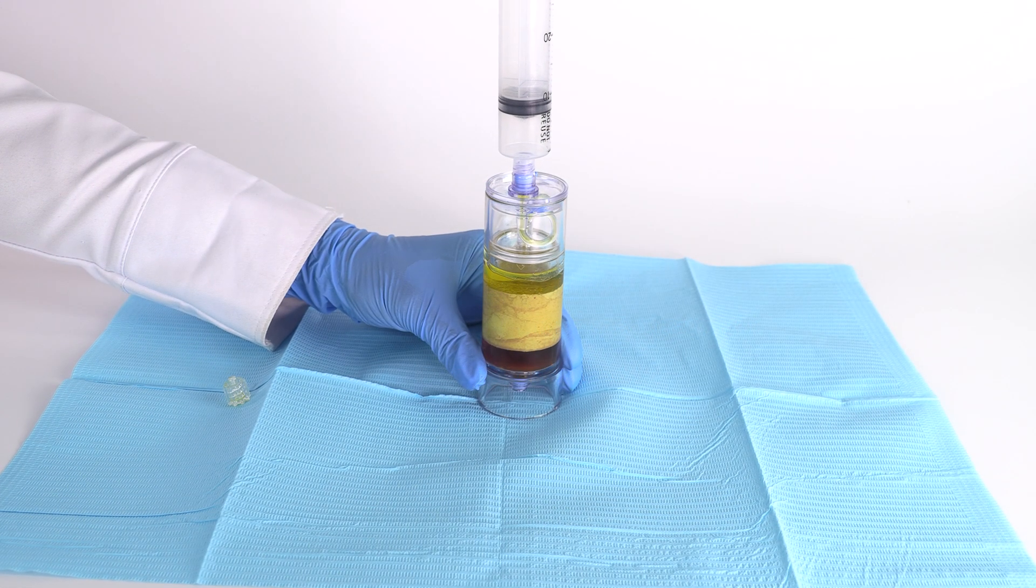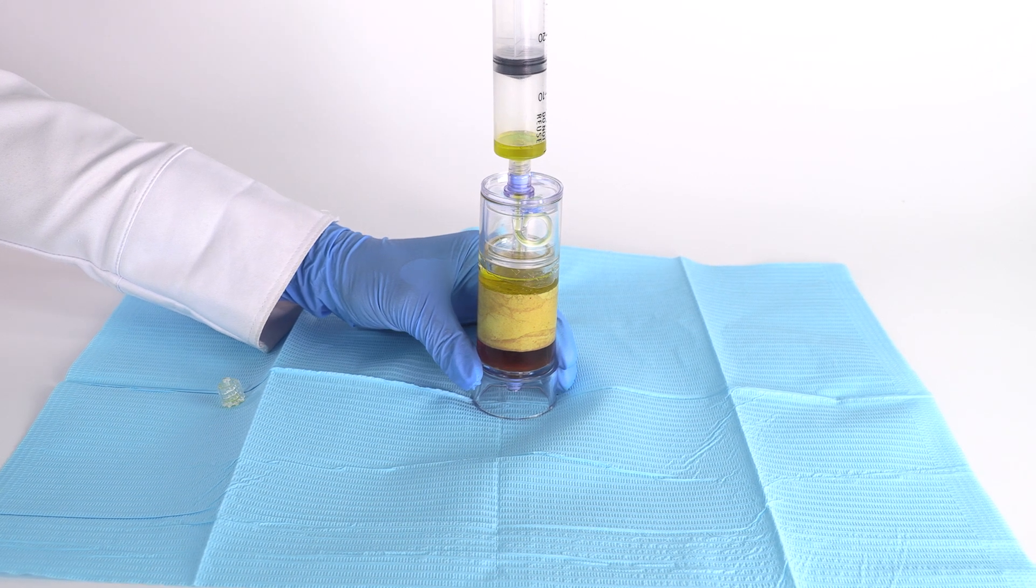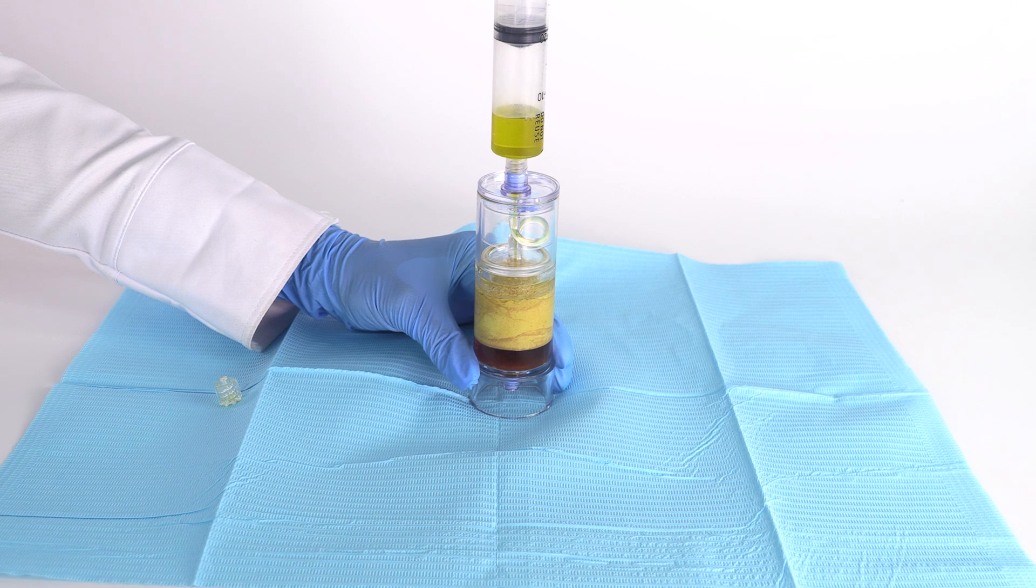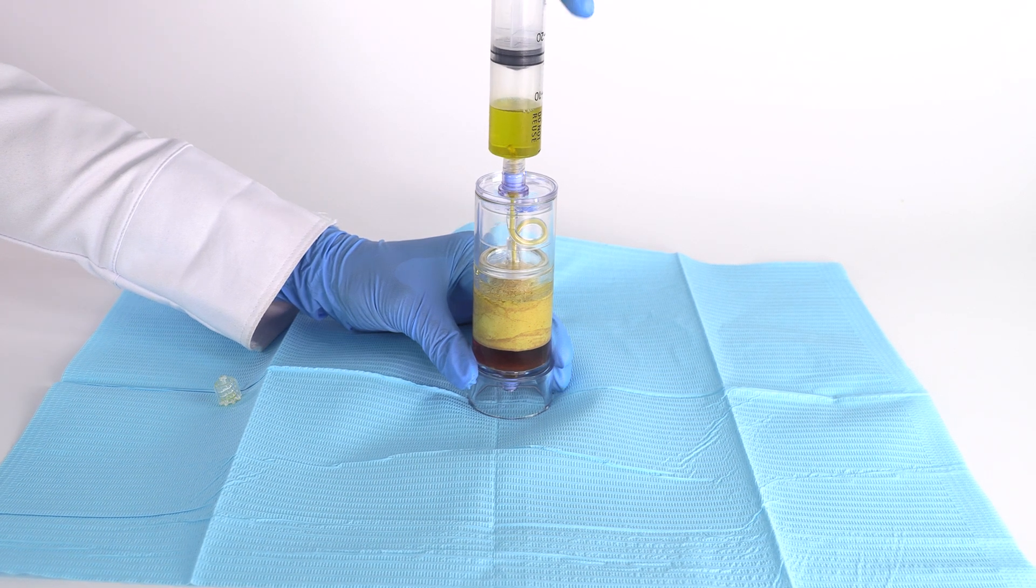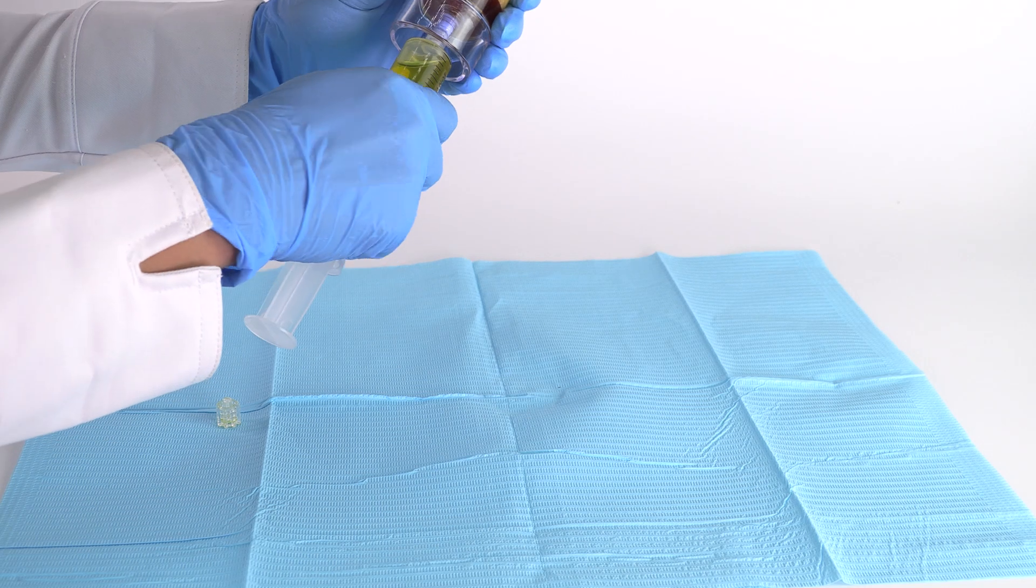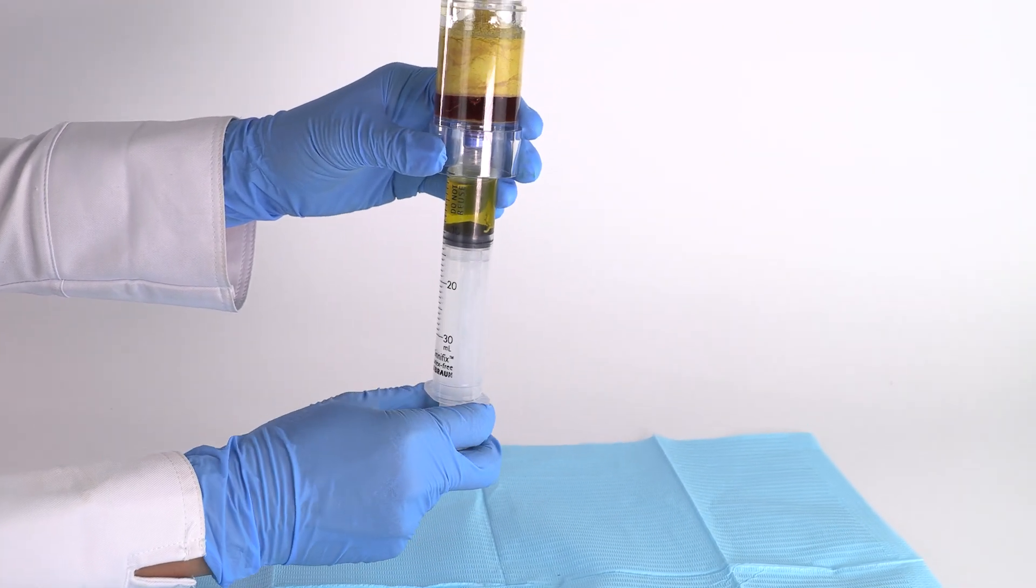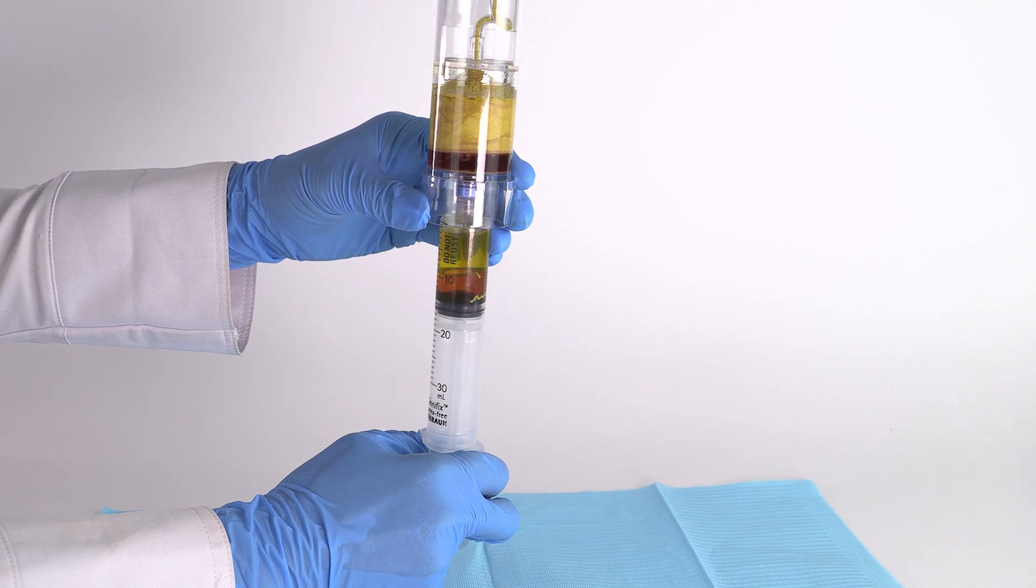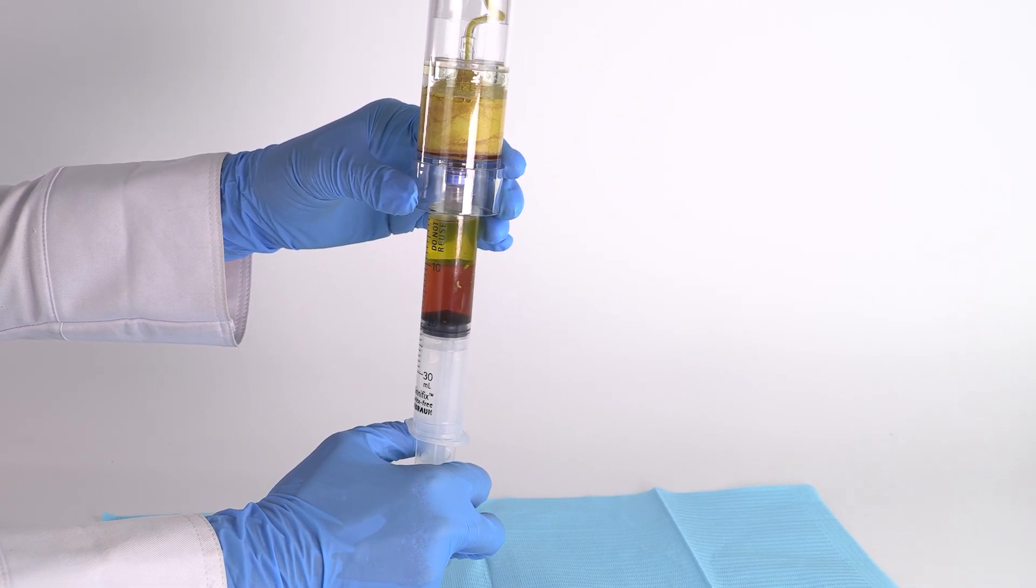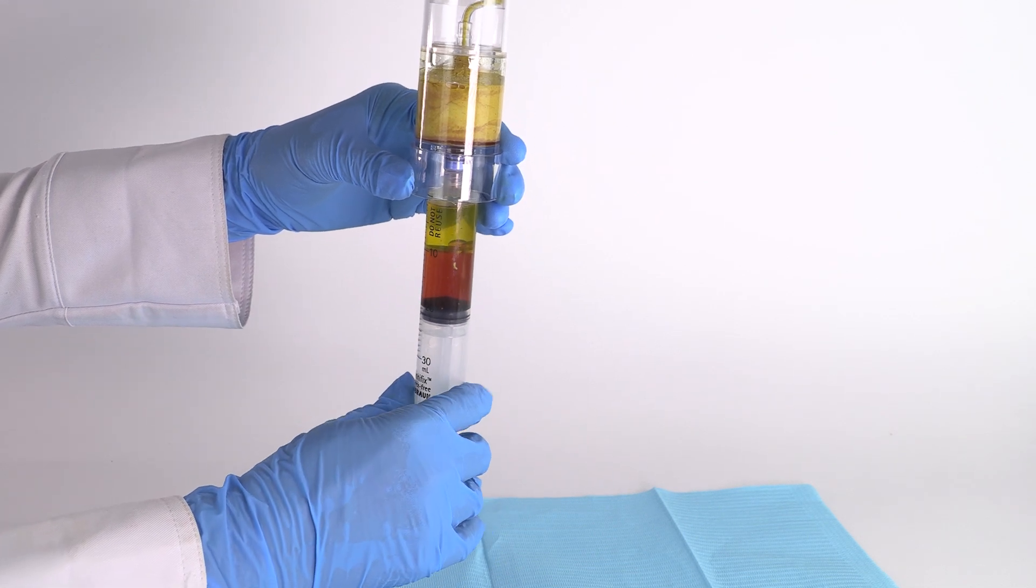Attach the 30 milliliter syringe to the top port and aspirate the lipid oil solution. Then aspirate the Infernatin solution through the bottom port, leaving the concentrated adipose sample behind.